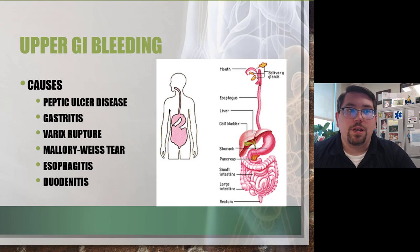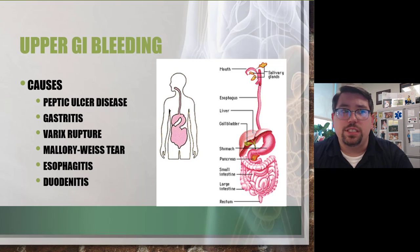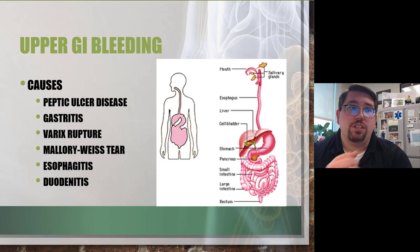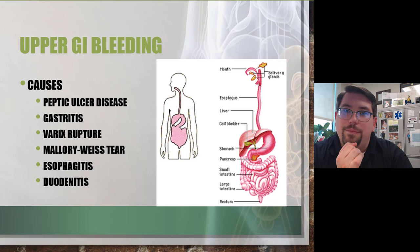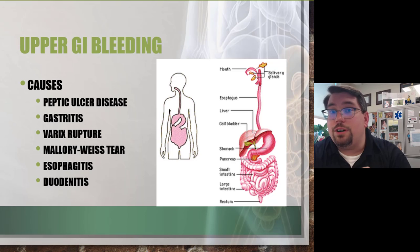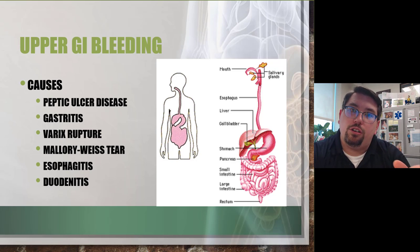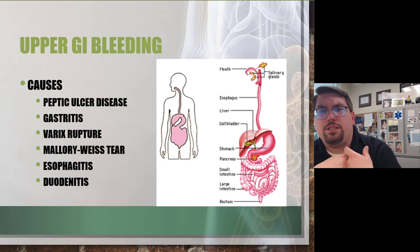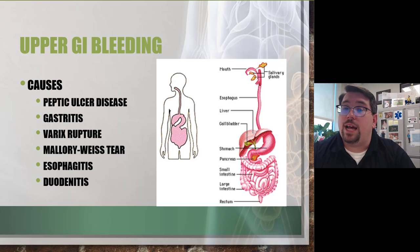Upper GI bleeds account for about 300,000 hospitalizations per year. The mortality rate has remained fairly steady at about 10%. A major factor contributing to mortality is patients treating their symptoms with home remedies and over-the-counter medications — antacids, anti-diarrheals — thinking it's stress when in reality they may have the onset of Crohn's disease.